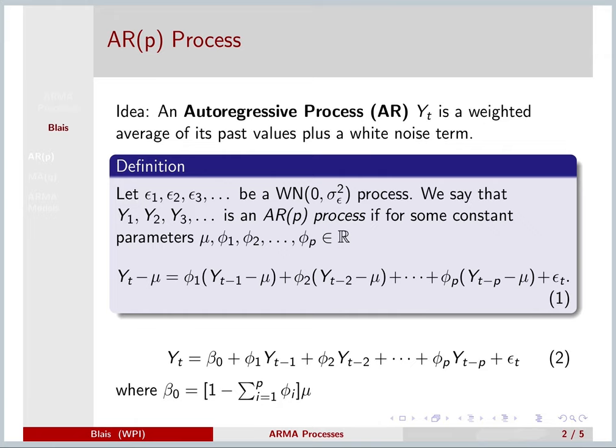First, let's review an autoregressive of order p or AR(p) process. In spirit, your current term Y_t is a weighted average of its past values plus a white noise term. And of course, we can work on any time scale, but it's easiest to think of these on a daily time scale.